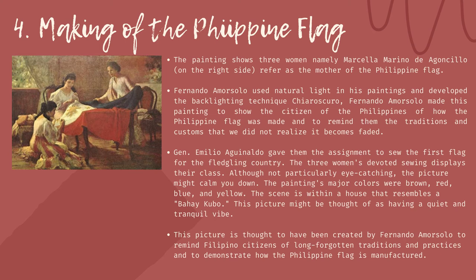Fourth: Making of the Philippine Flag. The painting shows three women, namely Marcela Marino de Agoncillo on the right side, referred to as the mother of the Philippine flag. Fernando Amorsolo used natural light in his paintings and developed the backlighting technique, chiaroscuro. Amorsolo made this painting to show the citizens of the Philippines how the Philippine flag was made and to remind them of traditions and customs that have become faded. General Emilio Aguinaldo gave them the assignment to sew the first flag for the fledgling country. The painting's major colors are brown, red, blue, and yellow. The scene is within a house that resembles a bahay kubo, conveying a quiet and tranquil vibe.